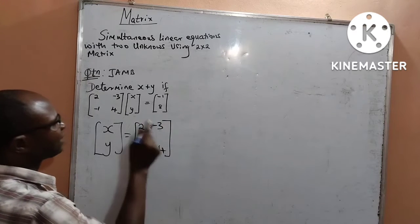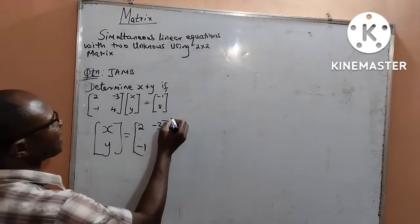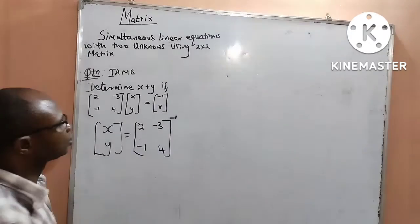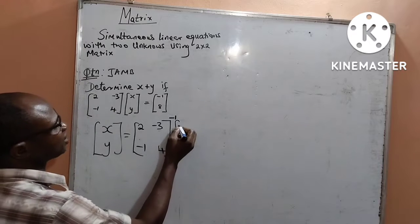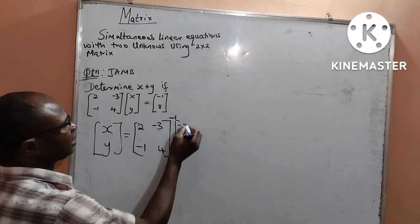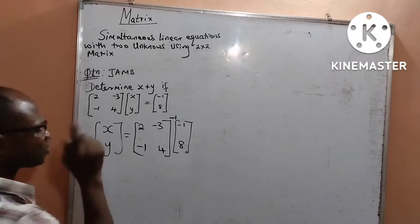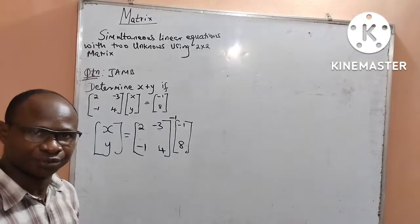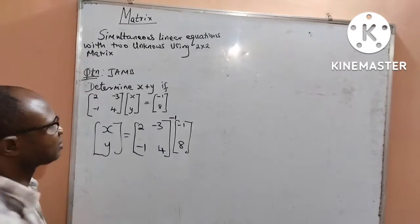My 2x2 is [2, -3; -1, 4]. I will find the inverse of this 2x2 matrix. The symbol of inverse is power minus 1. The inverse of this 2x2 will be used to multiply this 2x1 matrix, which is [-1; 8]. The result will give us the values of x and y.